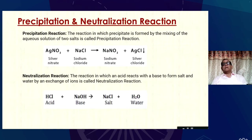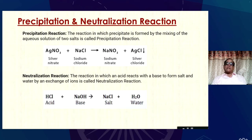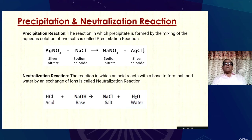What are precipitation reactions? Reactions in which a precipitate is formed by mixing aqueous solutions of two salts are known as precipitation reactions. For example, when silver nitrate reacts with sodium chloride, it forms sodium nitrate and a precipitate of silver chloride. What is neutralization reaction? The reaction in which an acid reacts with a base to form salt and water by an exchange of ions is called a neutralization reaction.